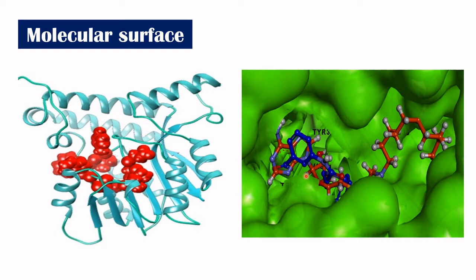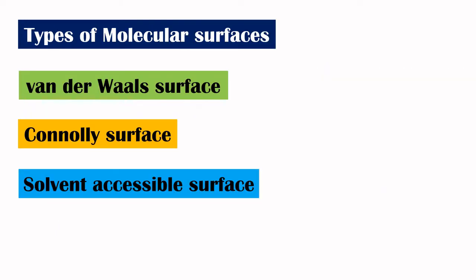To understand these non-covalent interactions, we need to understand what are the different types of surface presentations present in the molecules. Now let us study what are the different types of molecular surfaces. They are Van der Waals surface, Connolly surface, and solvent accessible surface or accessible surface.